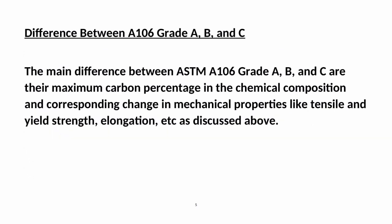The main difference between ASTM A-106 Grade A, B, and C are their maximum carbon percentage in the chemical composition and the corresponding change in mechanical properties like tensile strength, yield strength, elongation, etc., as discussed above.